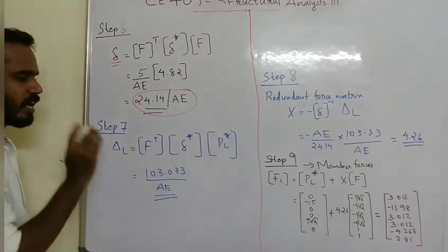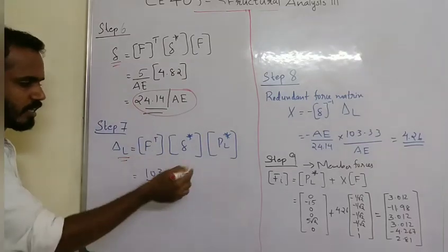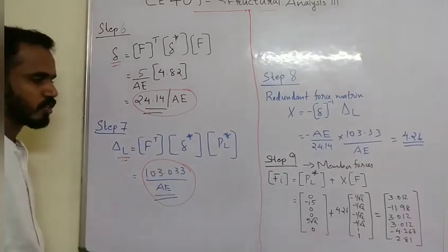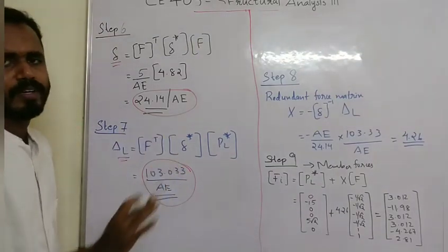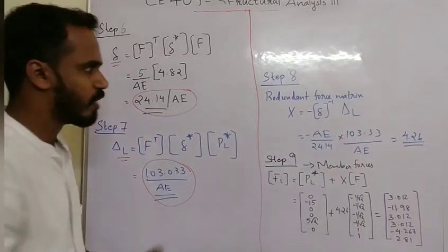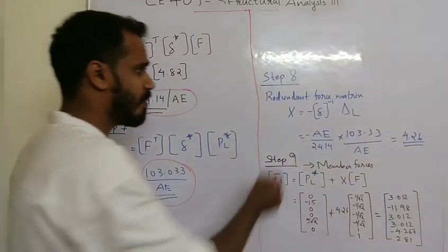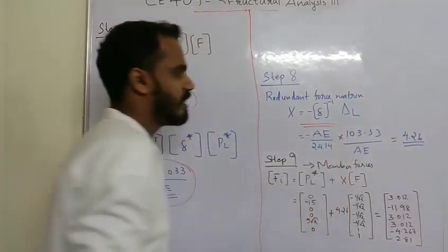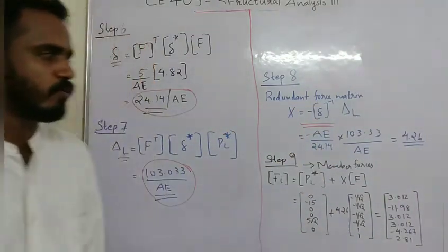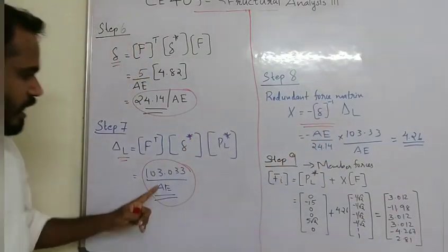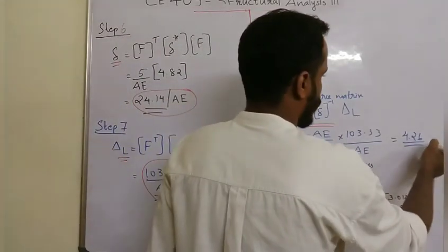Now that's step 6. Step 5 is delta — we need to calculate F transpose into delta star into P star. The final answer is 103.033 divided by AE. Then step 6: calculate delta L redundant. X is equal to minus of delta inverse into delta L. A divided by 24.14 minus N. So delta L equals 103.033 divided by AE. Substitute.